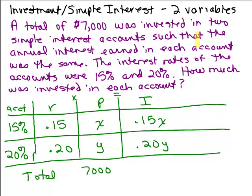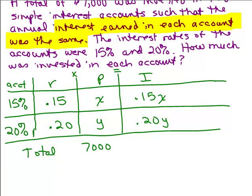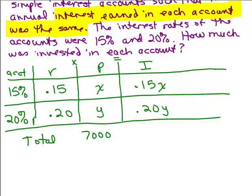So we look back up at the problem and what's it say? It says the annual interest earned in each account was the same. All right, so the interest earned in each account was the same. So how can we write an equation from our chart? Well, one equation is that the amount of money you invested added up to 7,000.